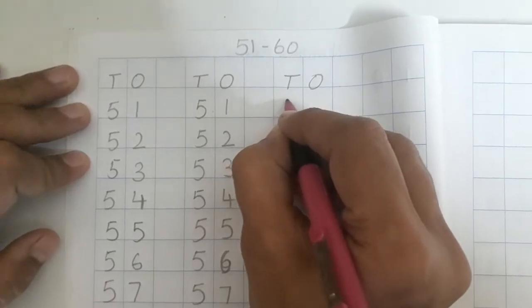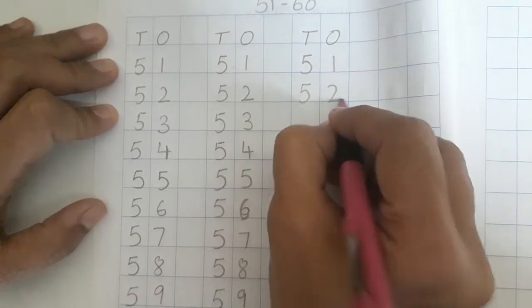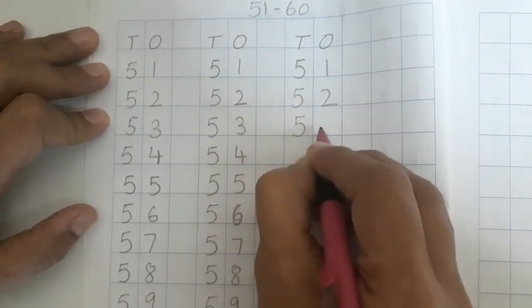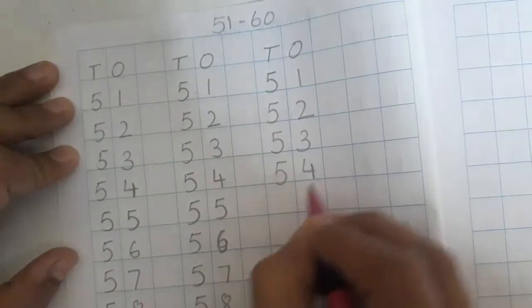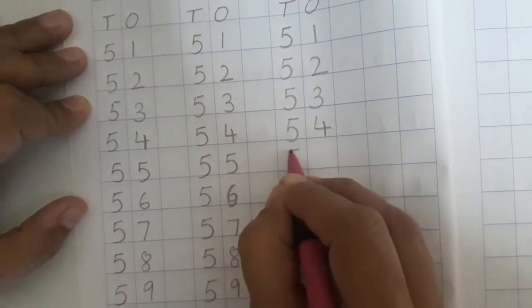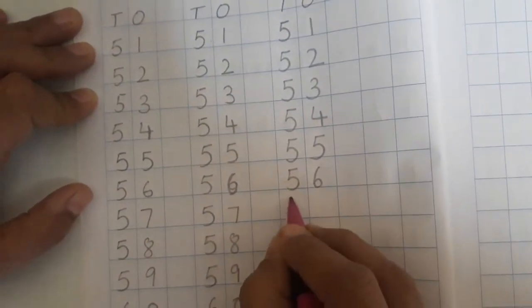So now start. 5, 1, 51. 5, 2, 52. 5, 3, 53. 5, 4, 54. 5, 5, 55. 5, 6, 56.